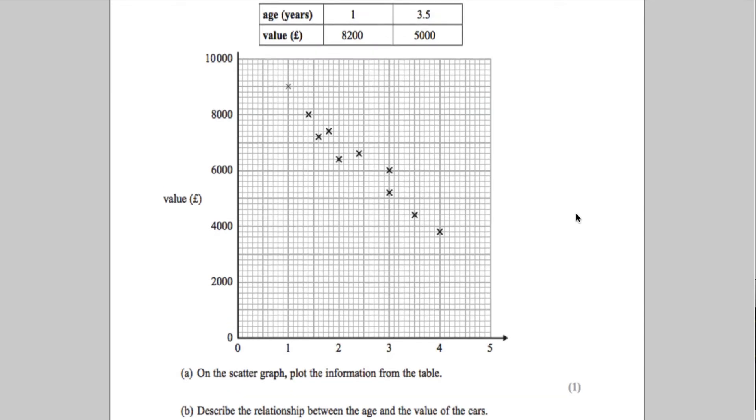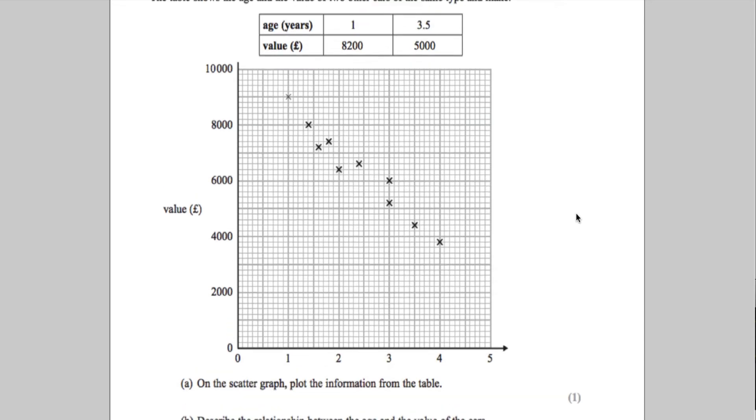Part A says on the scatter graph plot the information from the table. Just like plotting coordinates here, we should all get this mark, just be really careful. We're going to go to one year and plot that against 8,200 pounds. So one year, 8,000, that's 9,000 right there. If anywhere is going to go wrong, it's going to go wrong in your scale. Each of the lines is worth 200, so 8,200 is there.